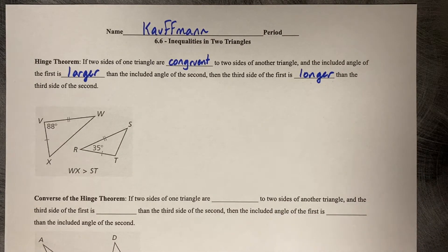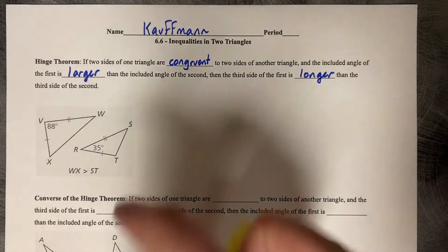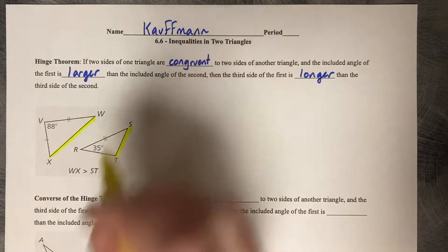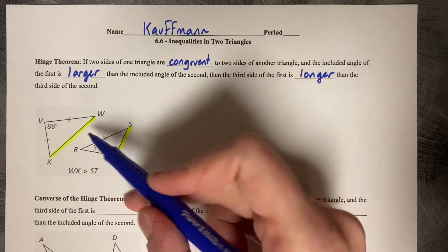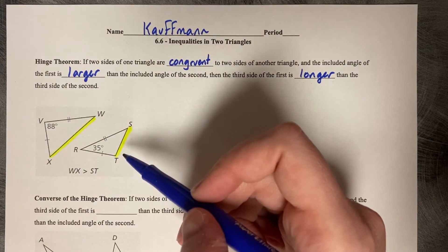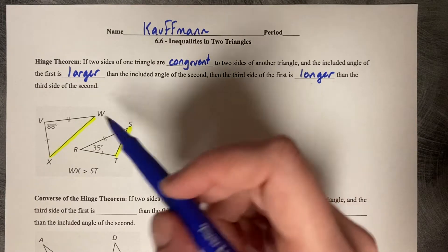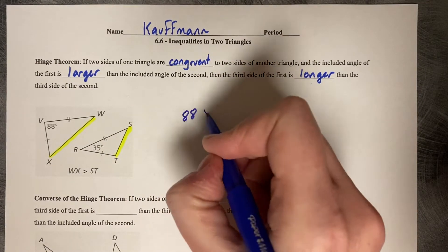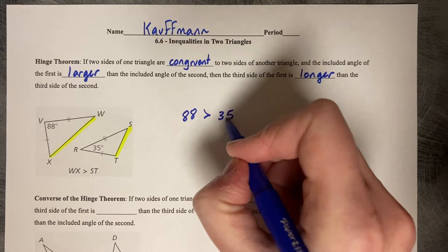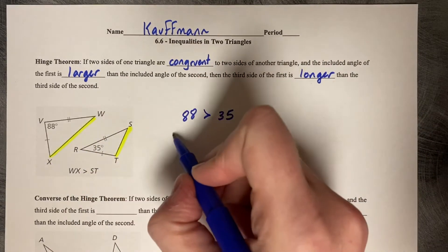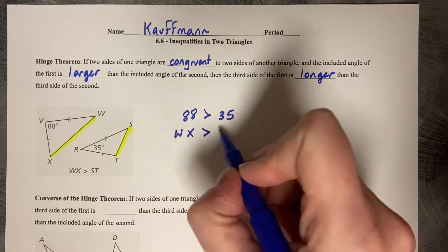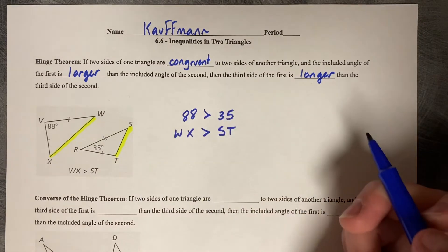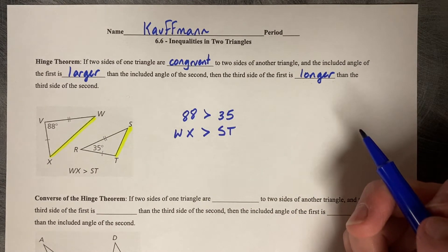We're comparing side length WX to side length ST. You can tell which one's larger just by looking, but you can prove it with their angle measures. Because angle V measures 88 degrees, which is larger than 35 degrees, WX is open wider than ST, so WX is always going to be longer than ST. It's just a size comparison — greater than or less than.